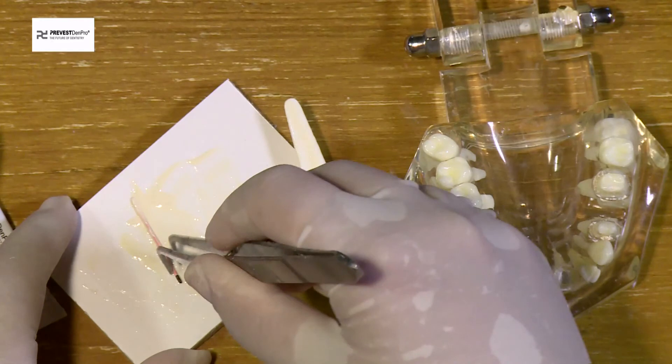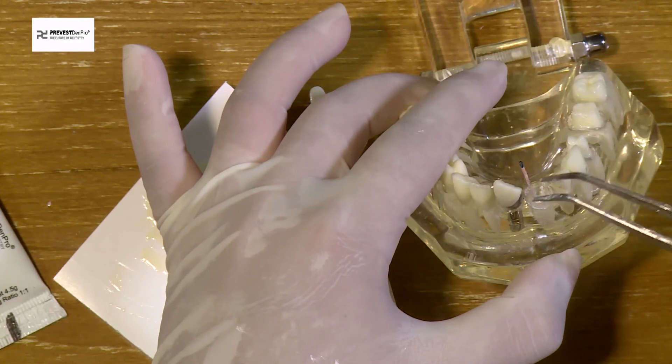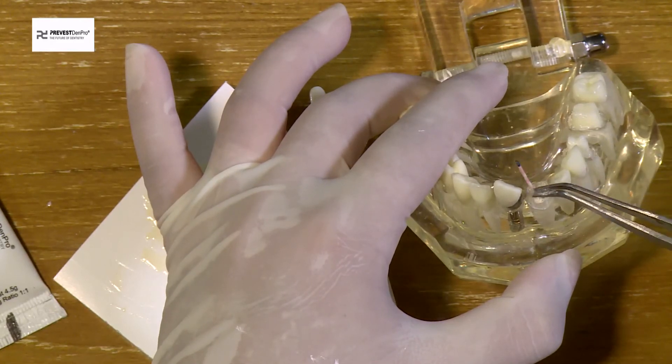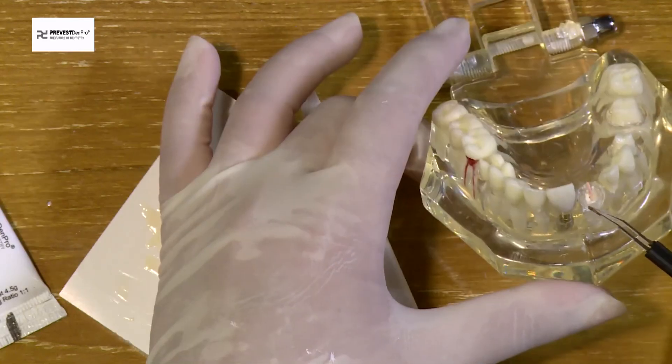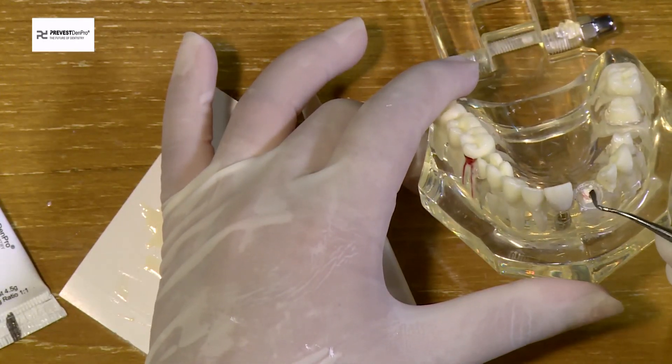The gutta percha cone is coated thoroughly with the sealer and placed into the prepared root canal space. You can appreciate the sealing property of the sealer. The excess gutta percha is seared off and condensed into place.